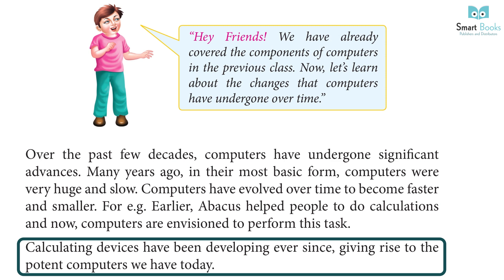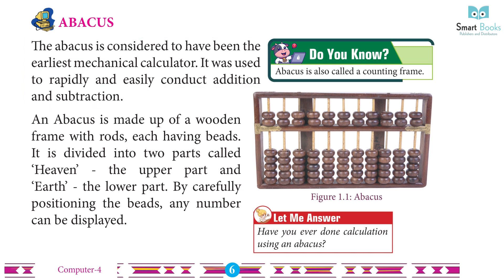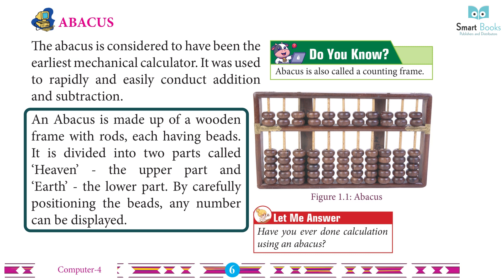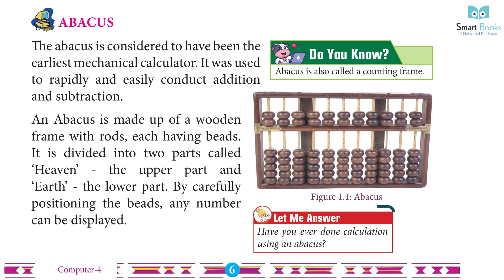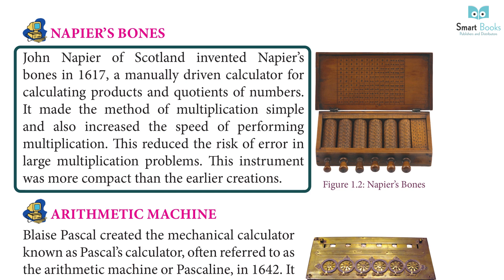Abacus: The abacus is considered to have been the earliest mechanical calculator. It was used to rapidly and easily conduct addition and subtraction. Did you know? The abacus is also called a counting frame. The abacus is made up of a wooden frame with rods, each having beads. It is divided into two parts called Heaven — the upper part — and Earth — the lower part. By carefully positioning the beads, any number can be displayed.